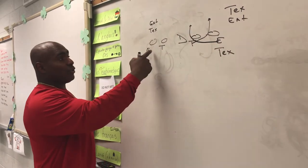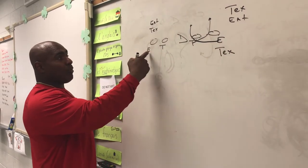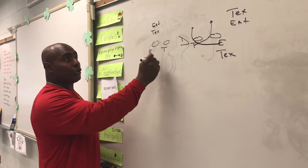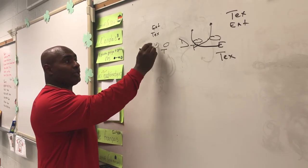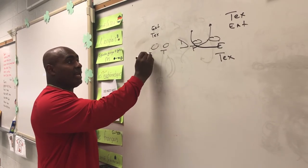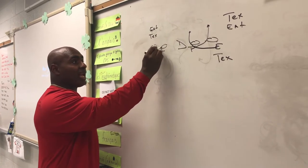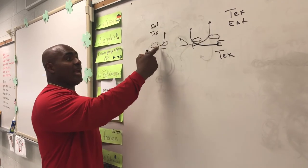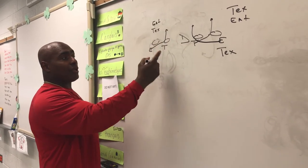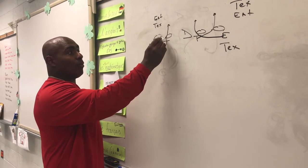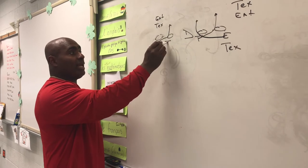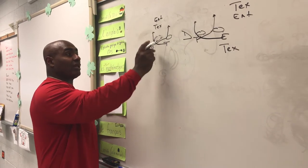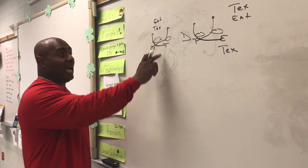Then we get to an EAT. We tell the defensive end: you're going first, get to the third shoulder — one, two, three. He goes here, he must get vertical. He gets back to the third shoulder — one, two, three — he gets back to the third shoulder and gets vertical. He's the contain guy.